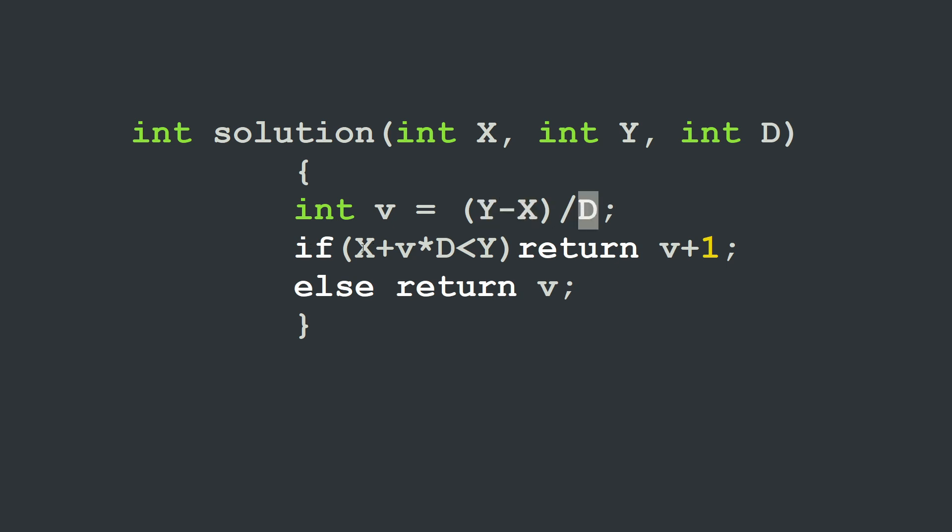And if x plus the distance covered by all the jumps, v times d, is strictly less than y, we return v plus one. In this case we use our additional jump. Otherwise we simply return v and it should be enough to reach y.